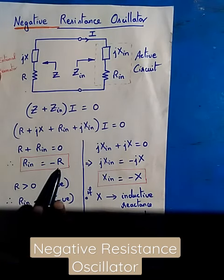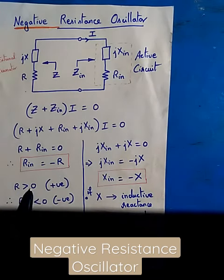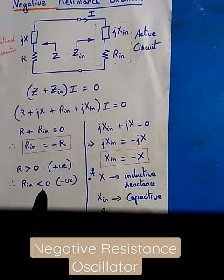Usually, this external resonator R is greater than 0. So therefore, Rin will be less than 0.